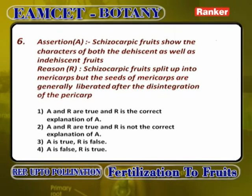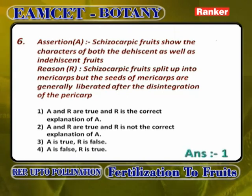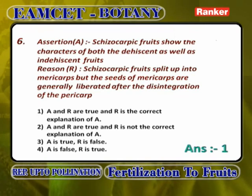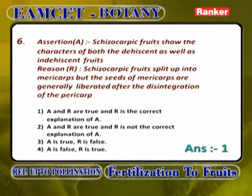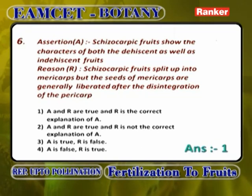Schizocarpic fruits show the characters of both dehiscence as well as indehiscence fruits. Schizocarpic fruits split into mericarps, but the seeds of mericarps are generally liberated only after the disintegration of the pericarp. The answer is A and R are correct, and R is the correct explanation of A.